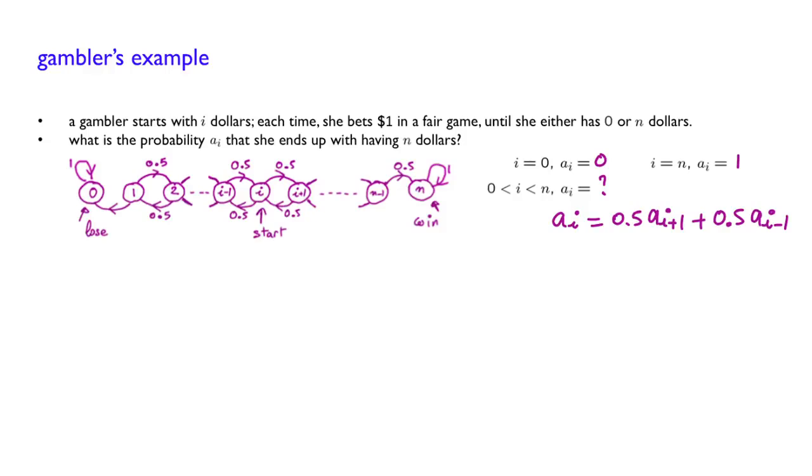And this is a system of equations that you can solve. It's not very difficult to solve. Actually, you can look in the textbook. There will be some trick to do that. There are many ways to do that. We're not going to spend our time going into details. But essentially, if you solve that system, you will see that the answer will be that a_i is i over n. So if you start with i amount of money, the probability that you're going to reach your goal n is i over n.